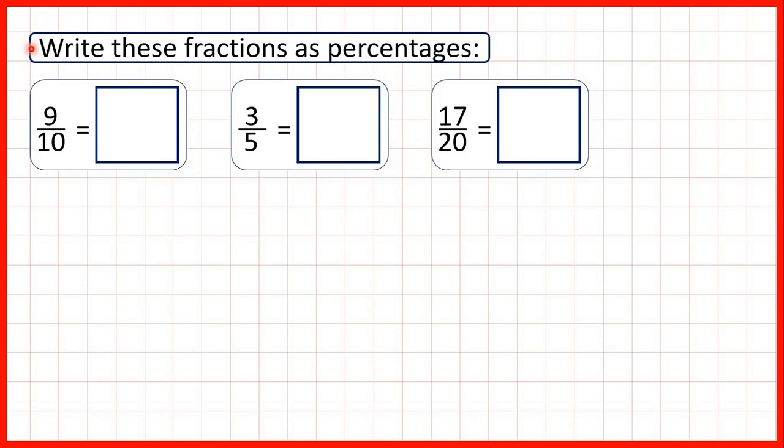We need to write these fractions as percentages. First we have 9 tenths. Remember, a percentage is a fraction over a hundred, so we need to find a fraction equivalent to 9 tenths which has a denominator of a hundred.